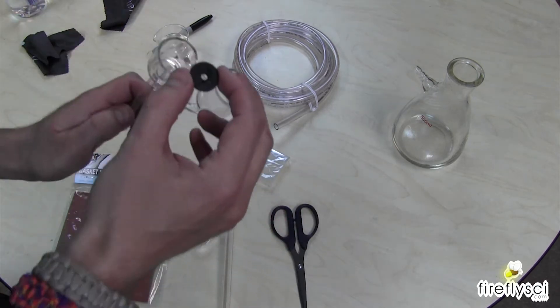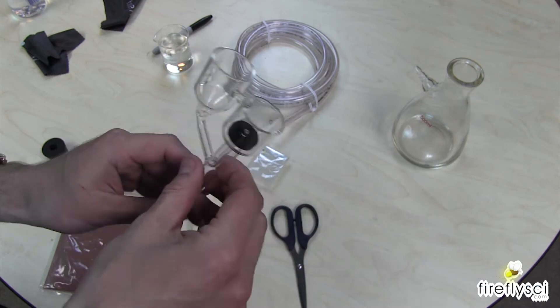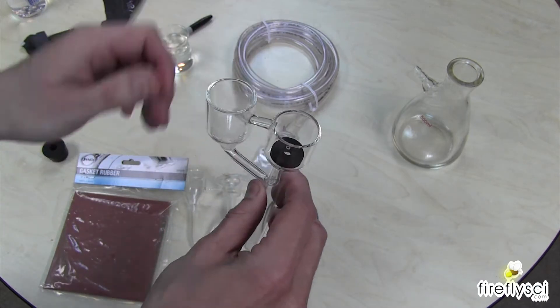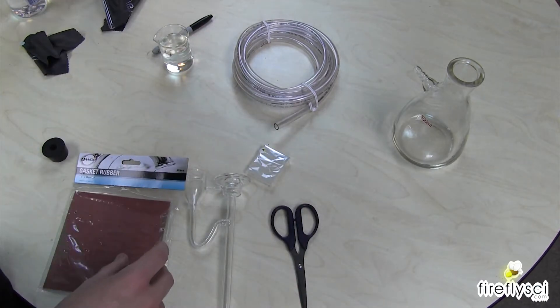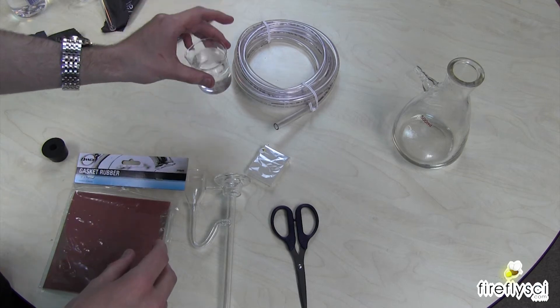The rubber, the stopper for the other one looks like this. It's a small little disc here. And it just sits right on top just like that.